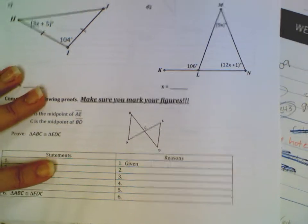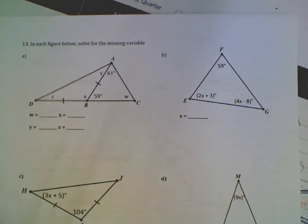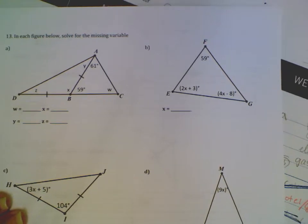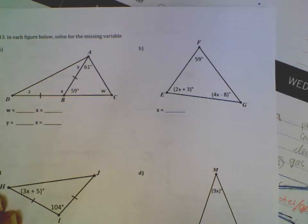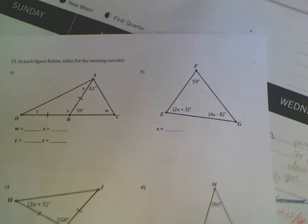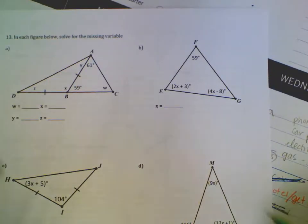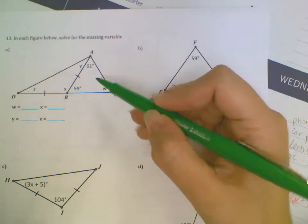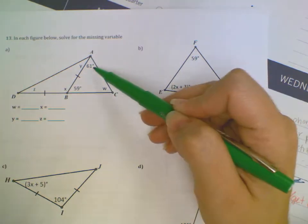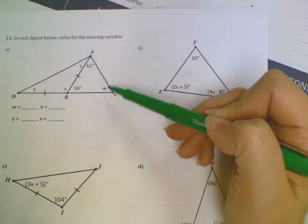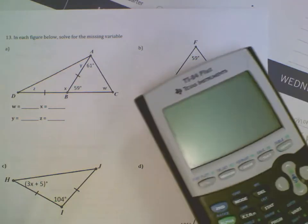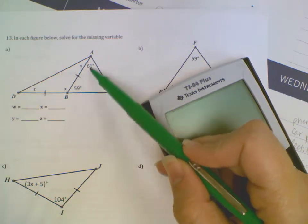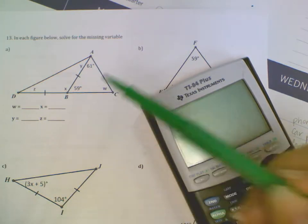Alright, for number 13, it says in each figure below, solve for the missing variable. So if I've got this triangle here, I can solve for W, because in triangle ABC I already have two of my three angles. To find that last angle, I can add 61 and 59 together, find out what the sum of those are, and then subtract from 180 to find this last piece. I could also do 61 plus 59 plus W equals 180 and solve that way.